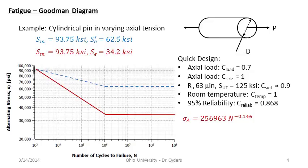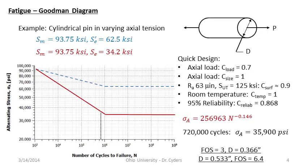Going back to our original static design with diameter 0.533 inches, we calculated our alternating and mean stresses. If we look at our factor of safety assuming a fully reversed case — ignoring the mean stress and looking only at the alternating portion — then at 720,000 cycles the allowable alternating stress at factor of safety of one is 35,900 psi. For a factor of safety of three, we'd come up with a diameter of 0.366 inches — a little less than three-eighths of an inch, about 25% different from our static design.